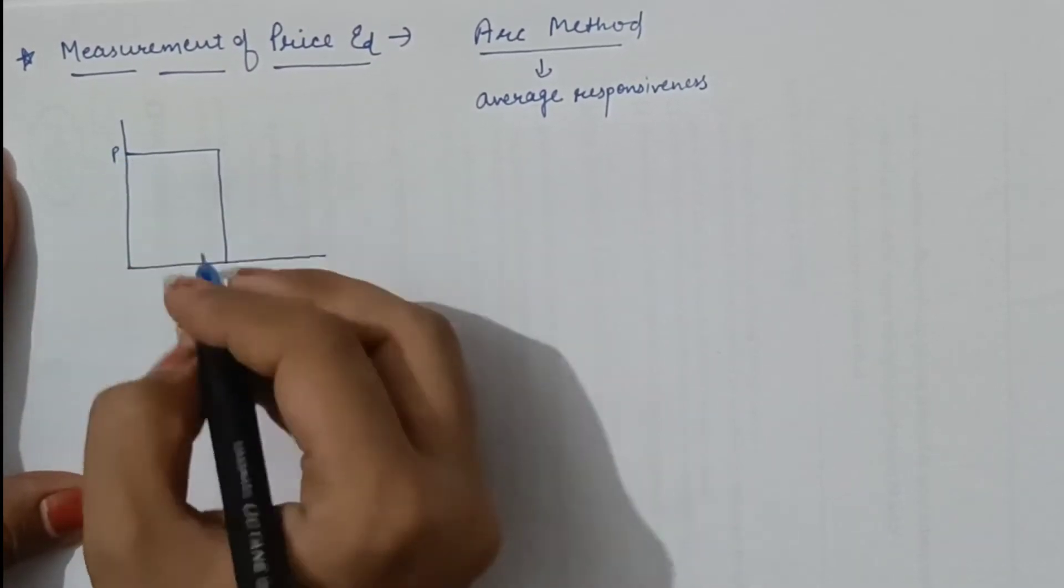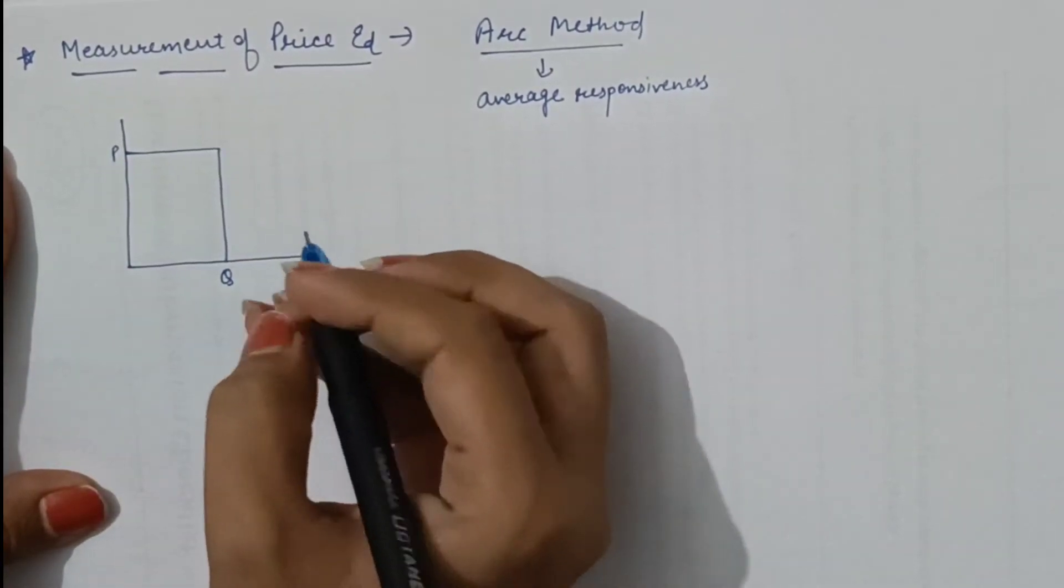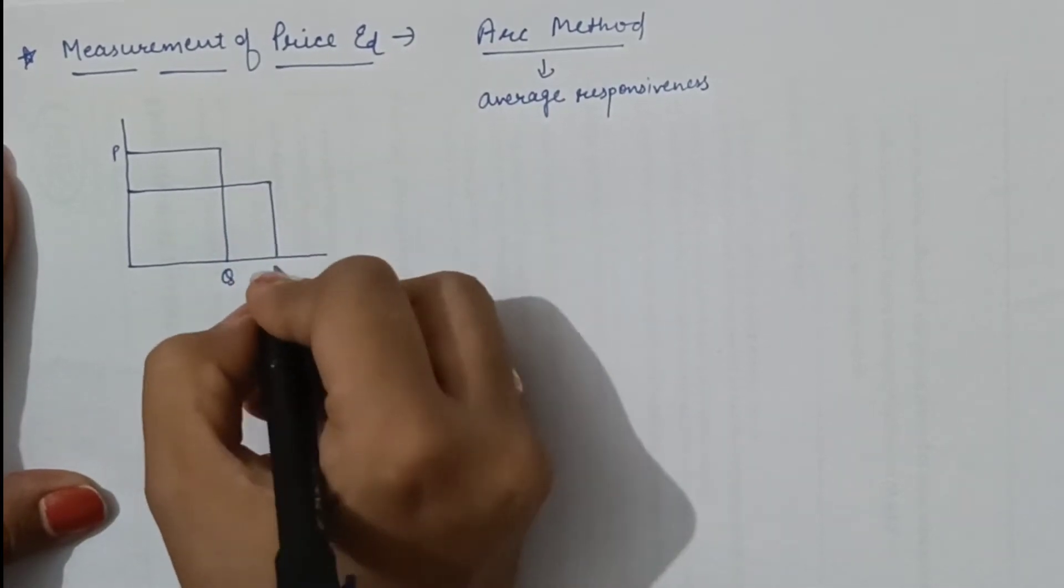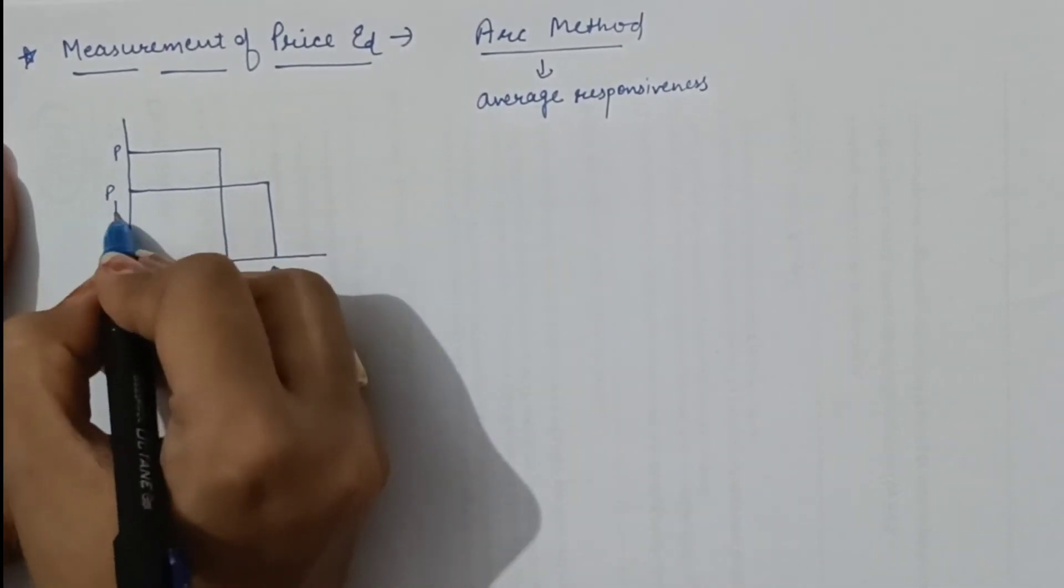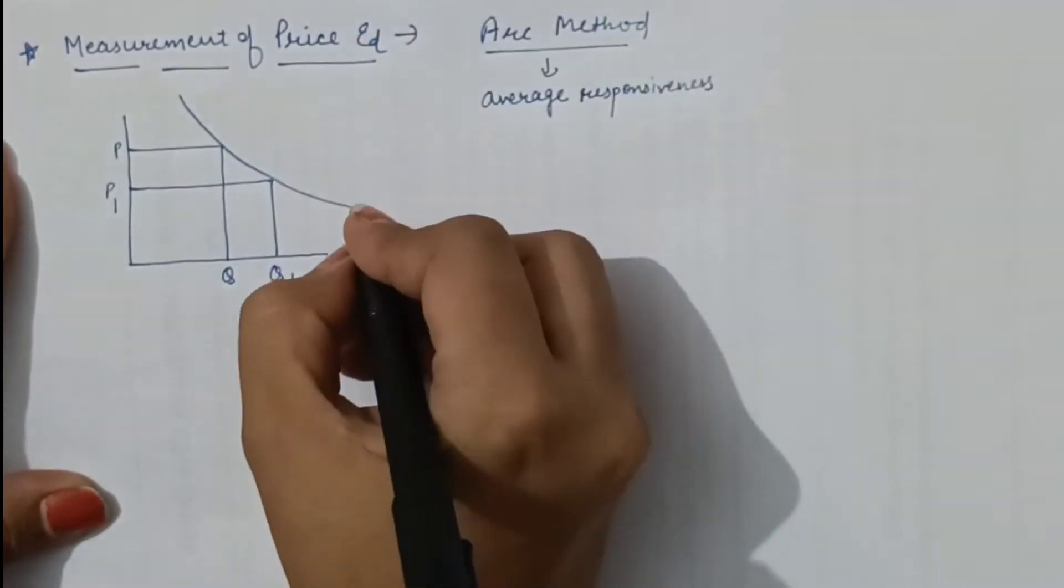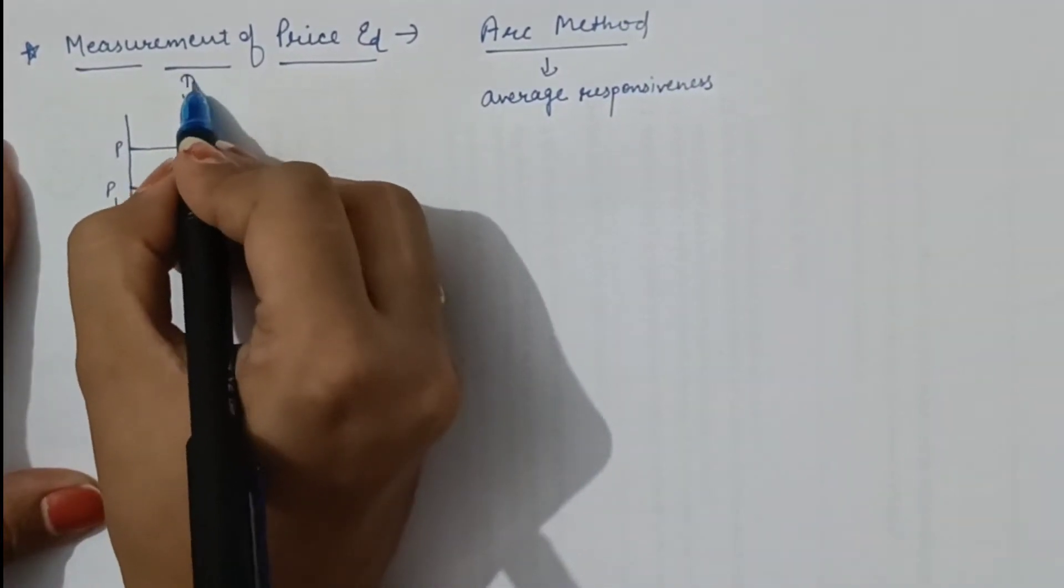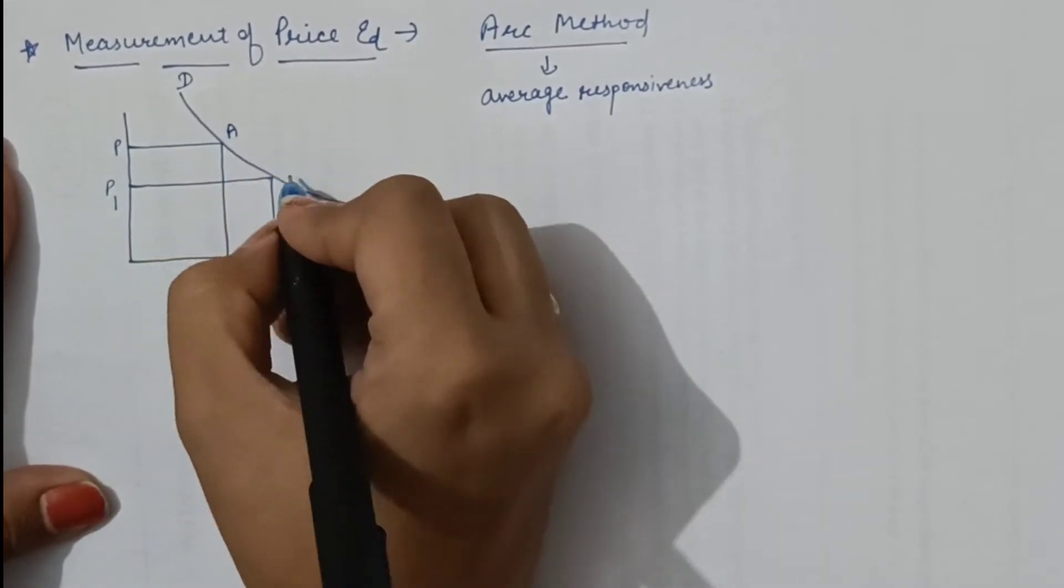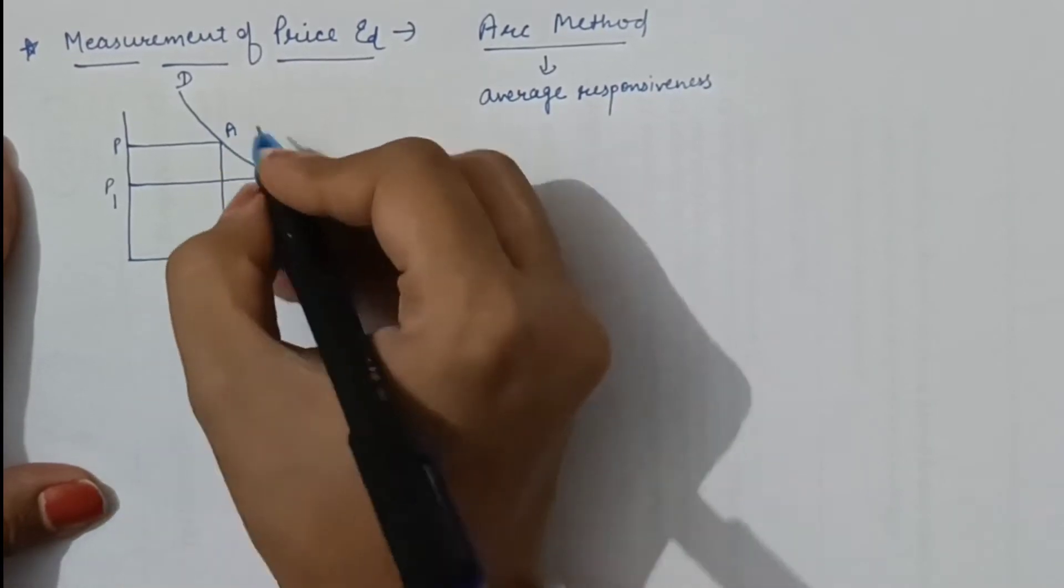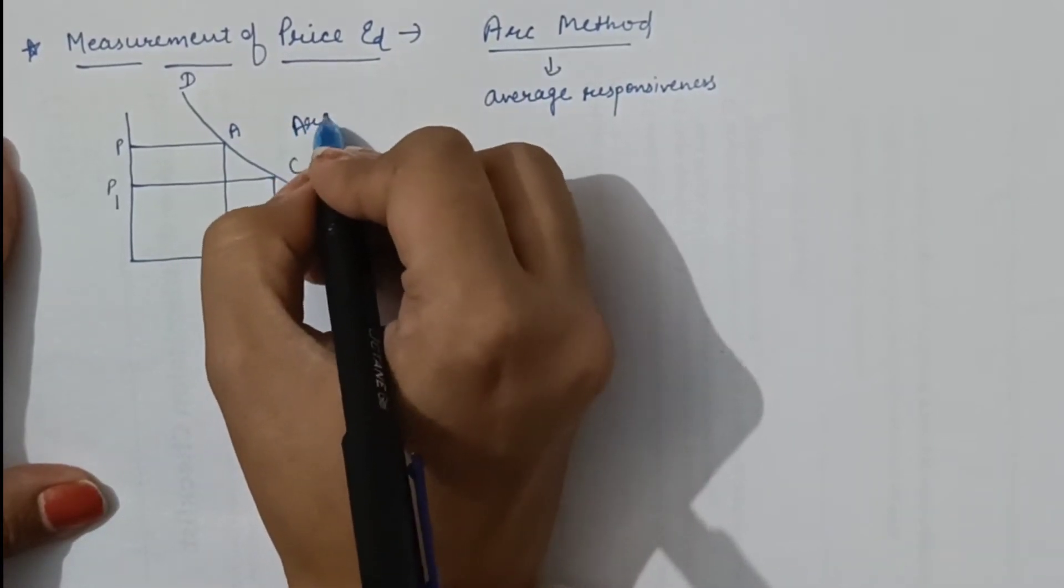At price P, quantity demanded is Q, and if price falls, then demand extends to Q1. This is a demand curve DD, and this portion shown by these two points A and C is the ARC.